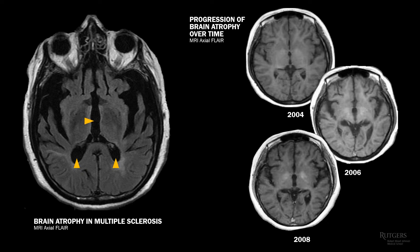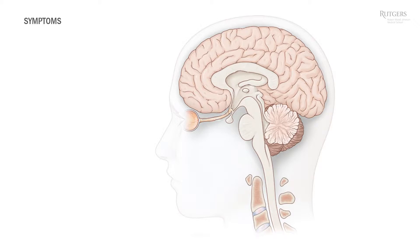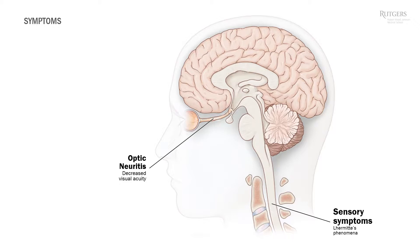Why do we like neurology? Certain parts of the brain are responsible for certain functions, and you can link location to symptoms. Depending on where the lesion is, you can expect certain symptoms — and in reverse, certain symptoms help predict which part of the brain or spinal cord is affected. For example, lesions in the optic nerve cause optic neuritis and blurry vision on the same side. Most common symptoms in MS are sensory — numbness, decreased sensation to pinprick and vibration — followed by vision problems, then motor and coordination abnormalities.